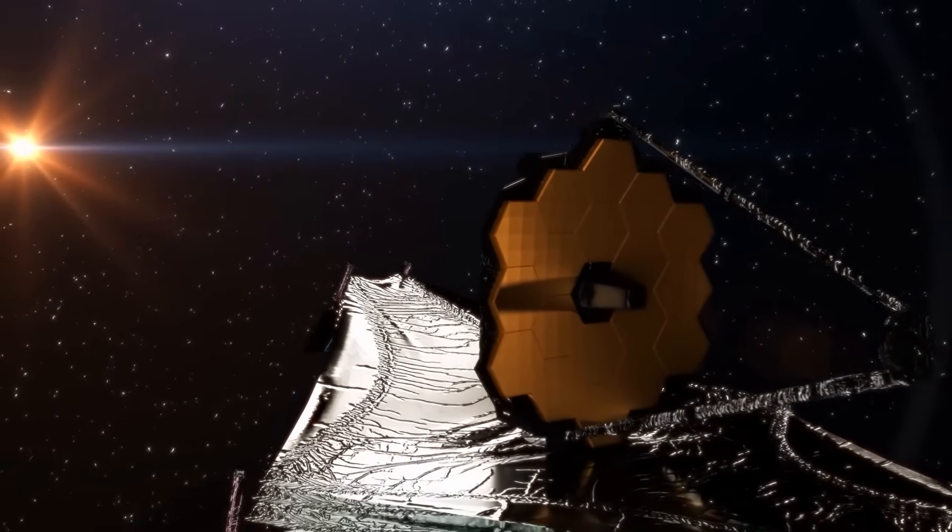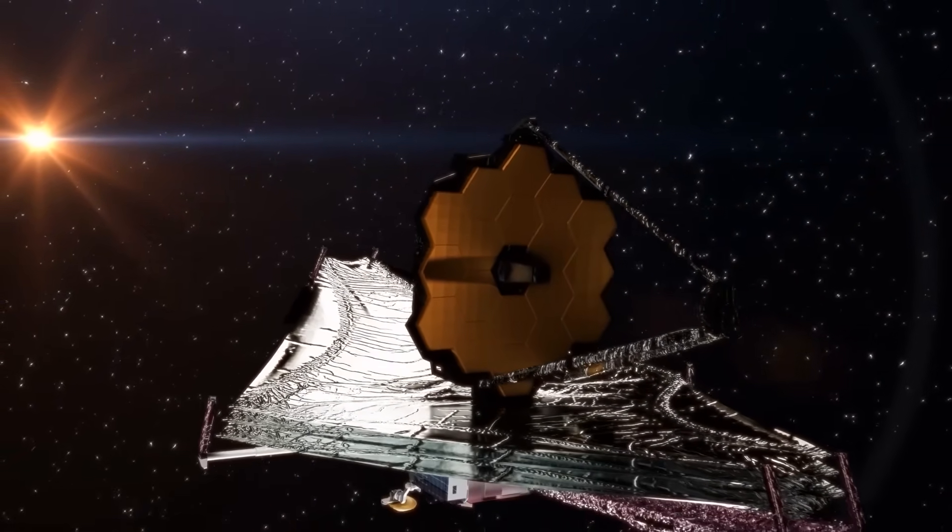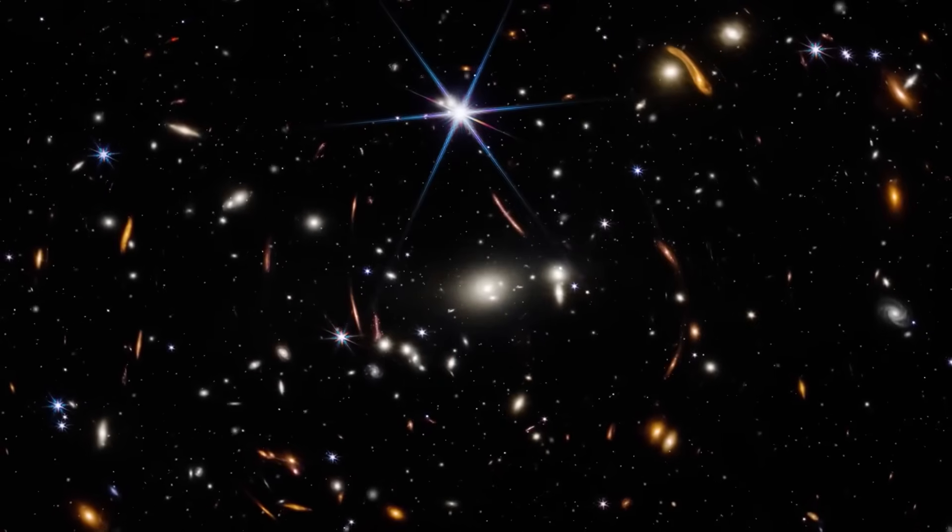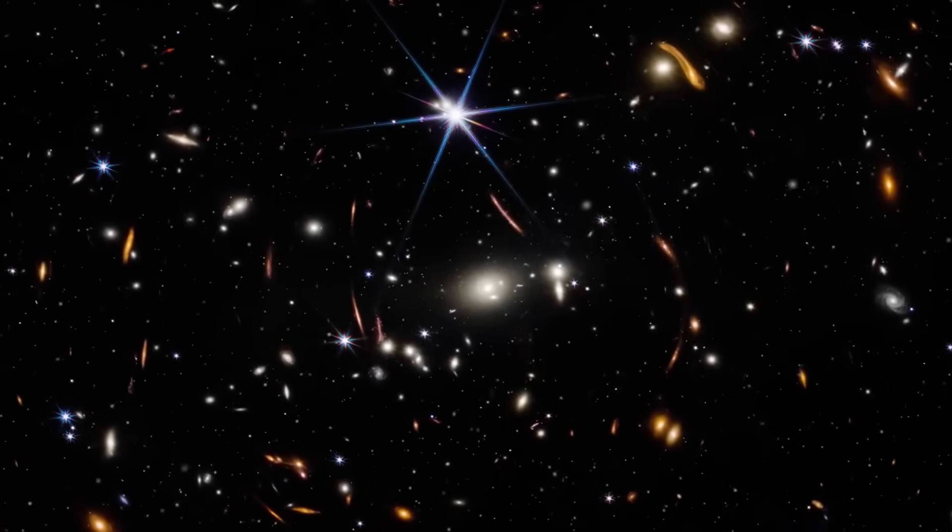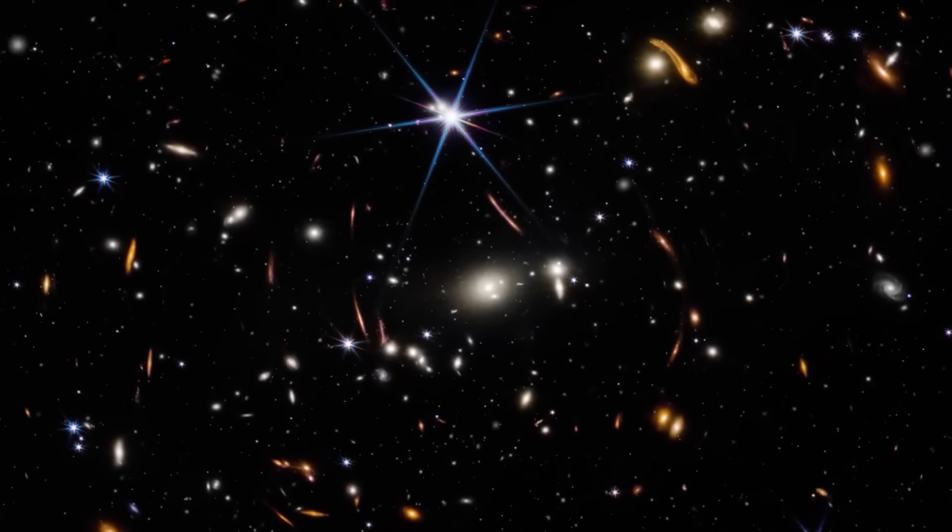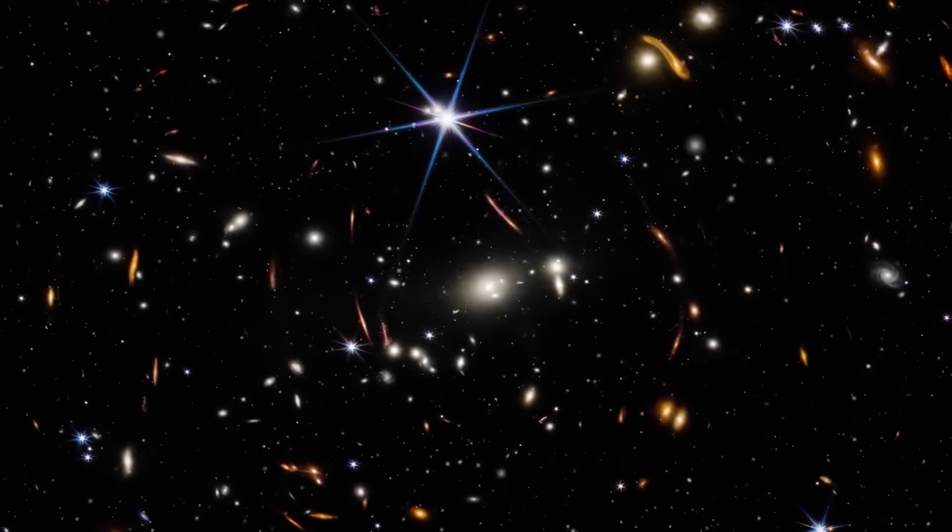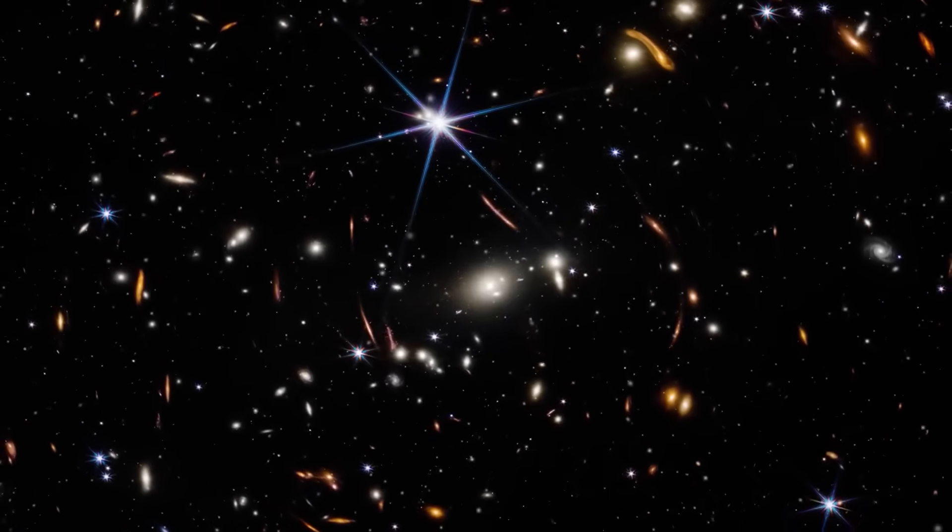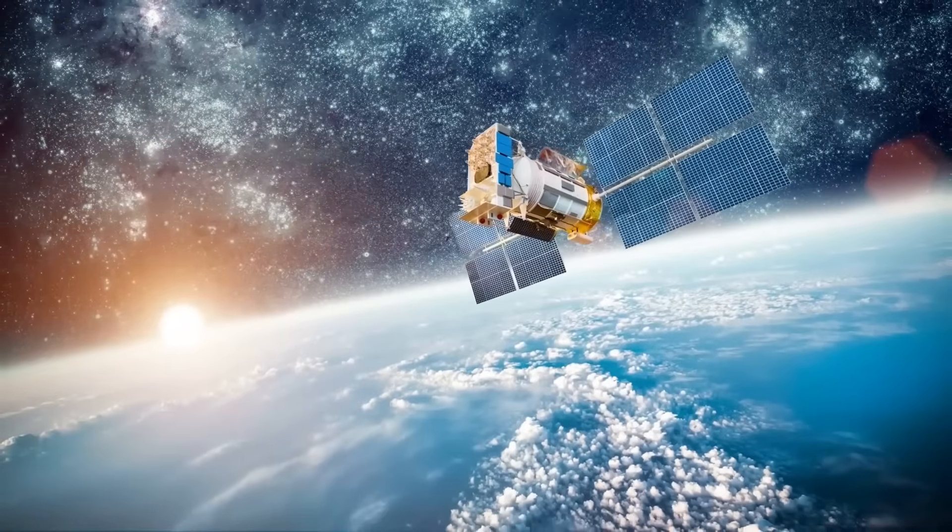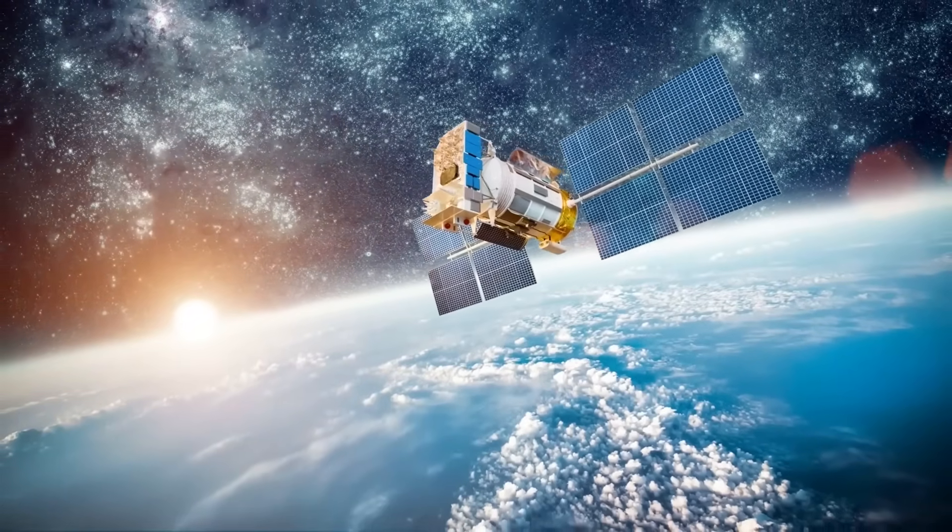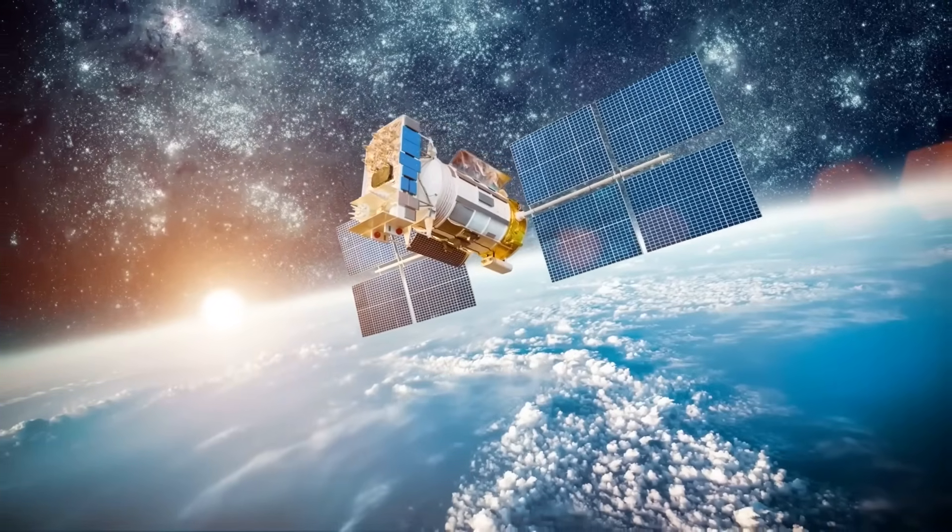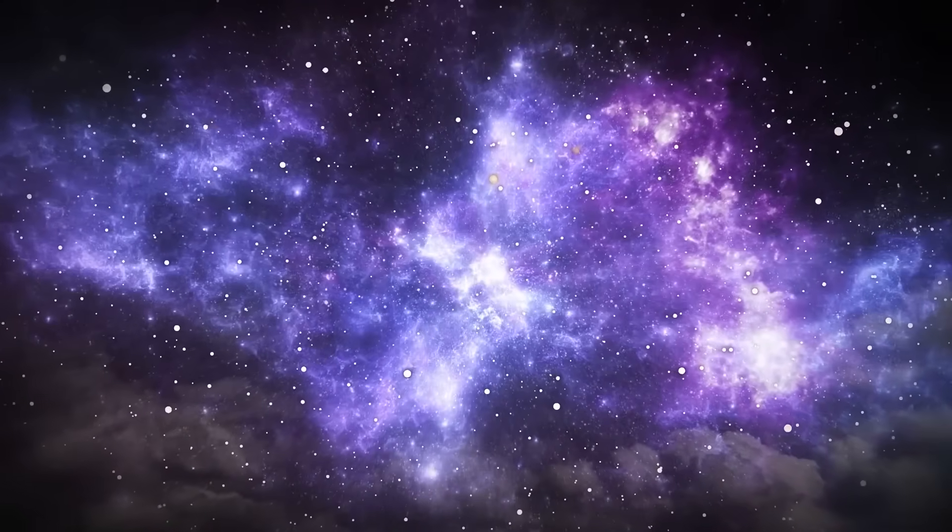Then came one of the biggest aha moments of the JWST era so far. Maybe those universe-breaking galaxies weren't as massive as we thought. A study led by Katherine Chorowski at the University of Texas at Austin, using JWST's Cosmic Evolution Early Release Science Survey, SEARS, revealed something sneaky. Some of the brightest, most distant galaxies weren't shining so intensely because of stars alone. They were hiding supermassive black holes at their cores.